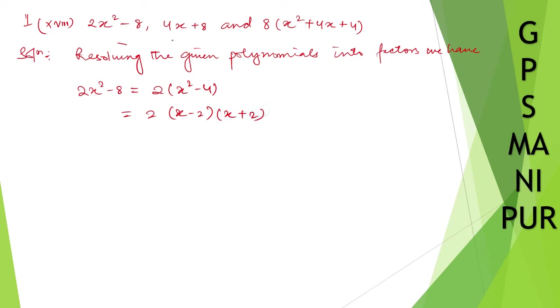Take the next: 4x plus 8. If you take 4 common, so it will be 4(x plus 2).